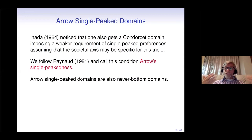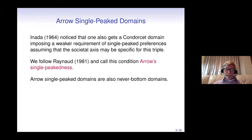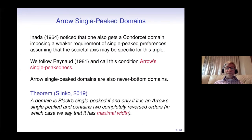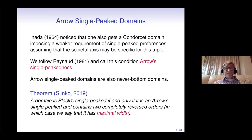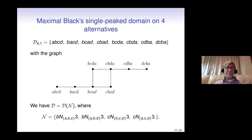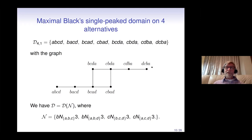In this talk I first discuss never-bottom domains, then add never-top, and then never-middle domains. The difference between Arrow single-peak and Black single-peak domains is that the latter additionally requires two completely reversed orders — this is called the condition of maximal width. So Arrow single-peakedness plus two completely reversed orders gives exactly Black's single-peakedness. This is illustrated by the graph of a maximal domain which is Black's single-peak domain on four alternatives, where all conditions are never-last.